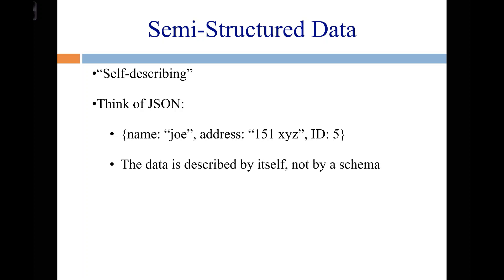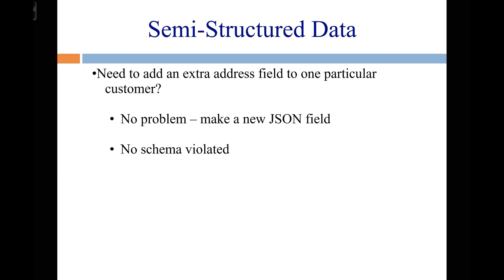In a relational table, the data does not have to say 'I am the name' — being in the name column is what makes it the name. If you need to add an address field to one record but not all of them, you just find that record, add a new JSON field, and put it back into storage. There's no schema to violate, so adding an extra field to one of them but not all of them is fine.